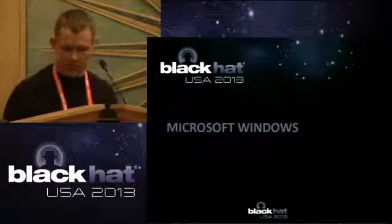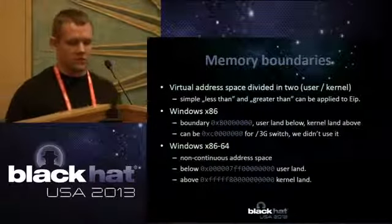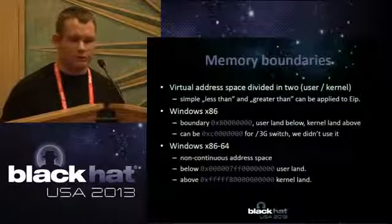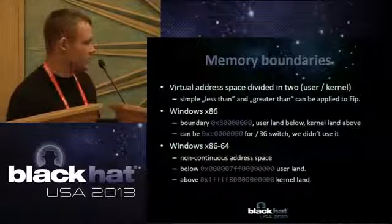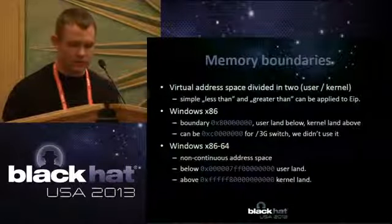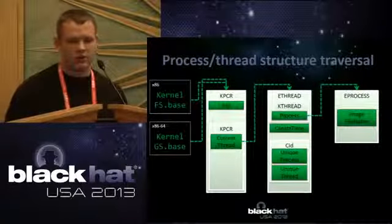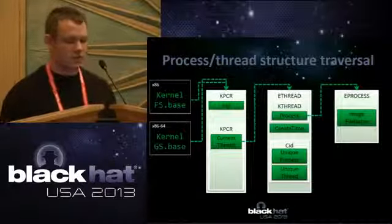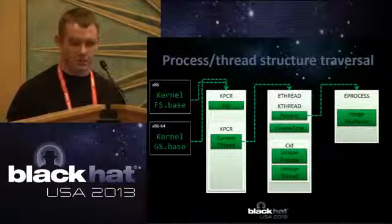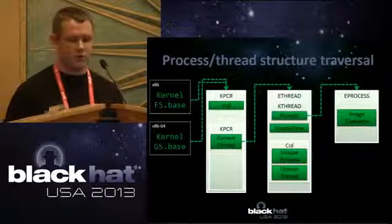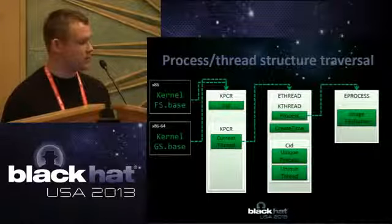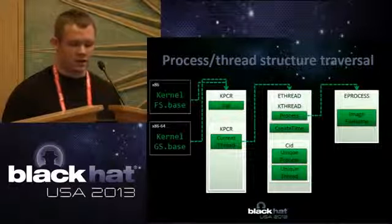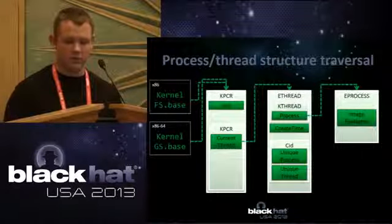Let's start with Microsoft Windows. When it comes to distinguishing user and kernel mode, it's really simple in Windows — the entire address space is divided into two parts and you can use a less-than or greater-than operator. The memory boundaries differ for 32-bit and 64-bit versions of Windows. For traversing structures containing thread and process information, we traverse three structures: first the KPCR, which contains a pointer to the current thread, which in turn contains a pointer to the current process. We get the pointer to KPCR using the base address of the FS segment on 32-bit Windows, and the GS segment base on 64-bit.